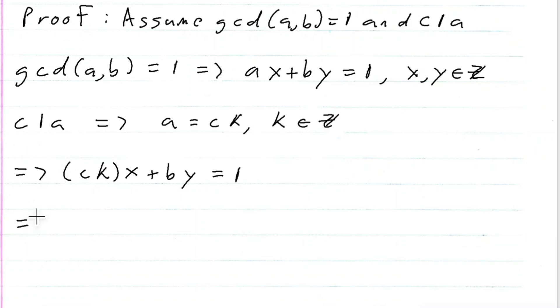Where, of course, if k is an integer and x is an integer, the product is an integer. So I have b times an integer plus c times an integer equal to 1.